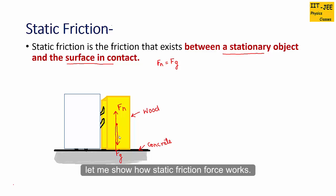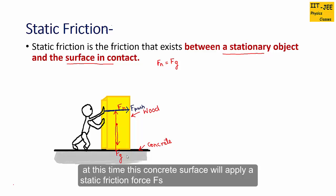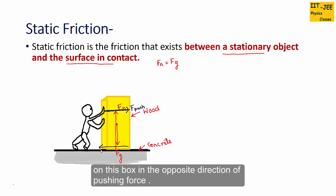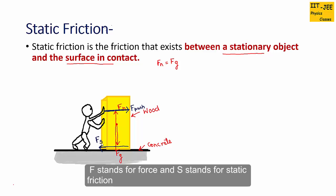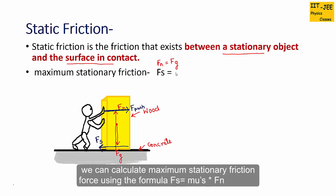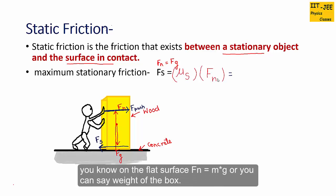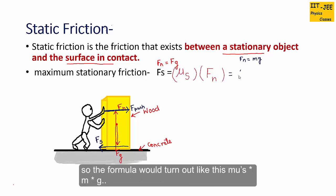Now a person starts pushing this box with a force in this direction. At this time, the concrete surface will apply a static friction force, Fs, on the box in the opposite direction of the pushing force. We can calculate maximum static friction force using the formula: Fs equals mu_s times Fn, where mu_s is the coefficient of static friction and Fn is the normal force. On a flat surface, Fn equals M times G, so the formula becomes: Fs equals mu_s times M times G.